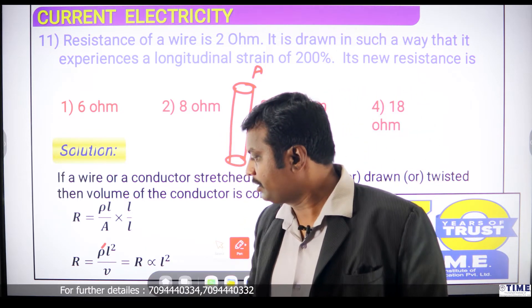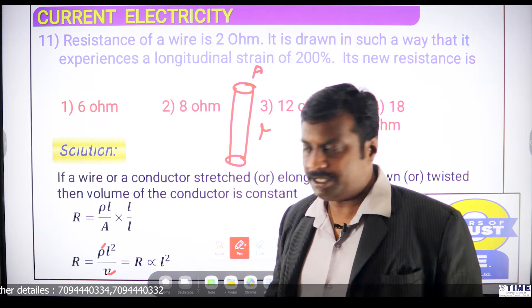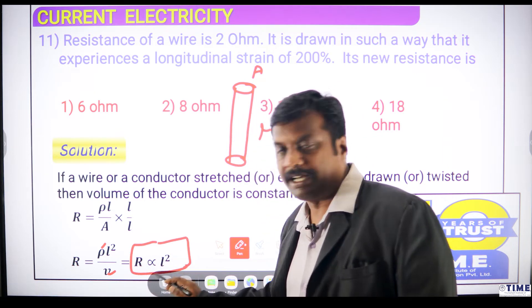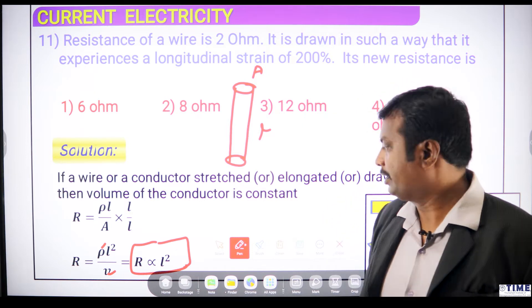Here resistivity is a constant, volume is a constant. We can write it as R is directly proportional to L square. R is directly proportional to L square.